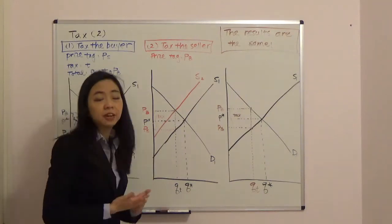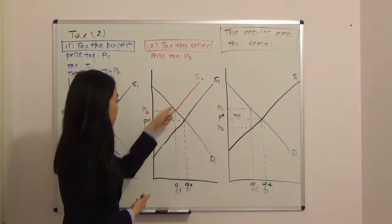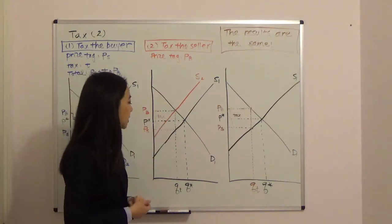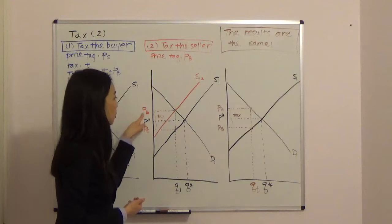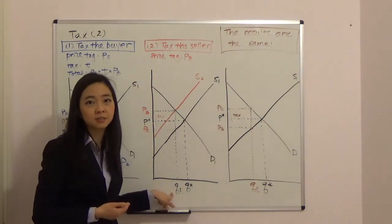So that will shift our supply curve from S1 to S2. And at the new intersection, you're going to see the equilibrium price is now PB and equilibrium quantity is now QT. T stands for tax.